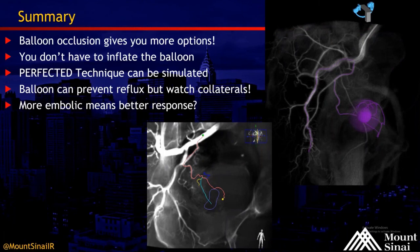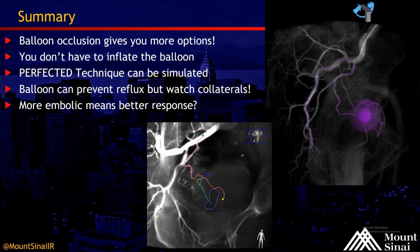To summarize: balloon occlusion gives you a lot of different options. I touched on two or three reasons why I use balloon occlusion in all of my embolizations. You don't always have to inflate the balloon — if you think you'll get a good embolization, leave the balloon down initially and then go up, and vice versa. Dr. Carnevale initially published on the perfected technique; with balloon occlusion we can accomplish the perfected technique without moving the microcatheter more distally in many cases — a modified perfected technique. The balloon can definitely be used as in the liver to prevent reflux, but watch for collaterals. There is no doubt in my mind that we can get more embolic into the gland using a balloon occlusion microcatheter, and whether that leads to better response remains to be seen, but I think the answer is probably yes.